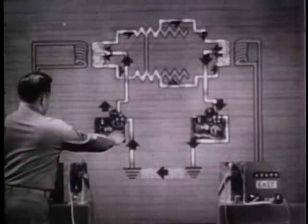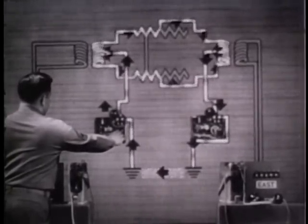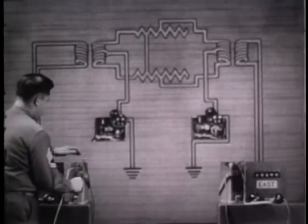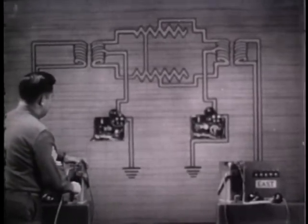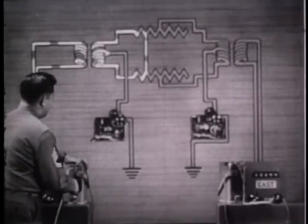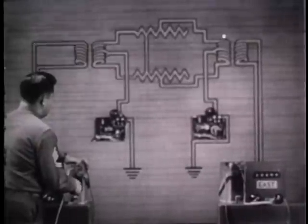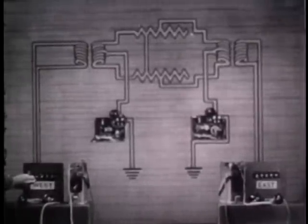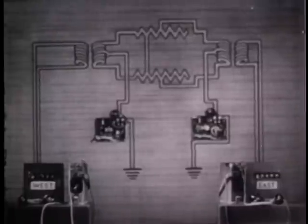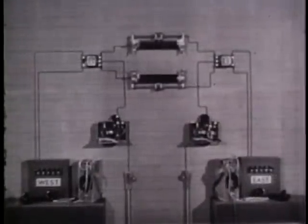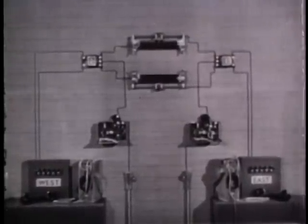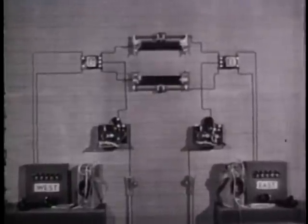We can see, then, that the telegraph channel is unaffected by the short. But the telephone channel is useless until the short is cleared. Here is our circuit restored to normal. The resistances of the two line wires are equal. The circuit is balanced.